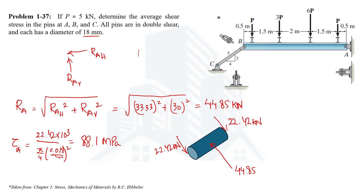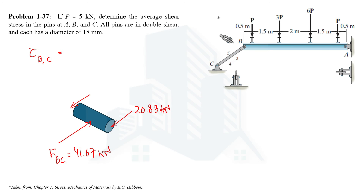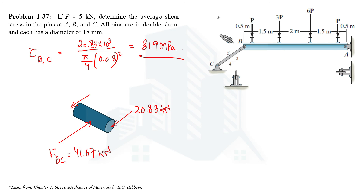For points B and C, since the force in member BC is the same magnitude at both ends, the shear stress in pins B and C will be the same. The force acting at each pin is FBC = 41.67 kN, which in double shear gives two forces of 20.83 kN each. The shear stress at B and C = 20,830 N / (π/4 × (0.018 m)²) = 81.9 MPa.